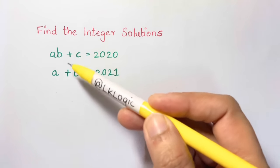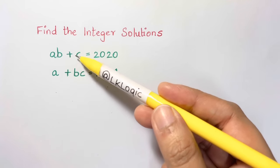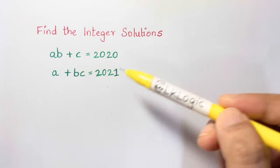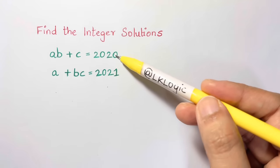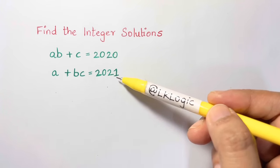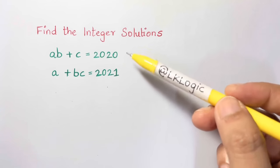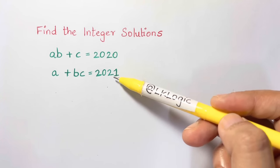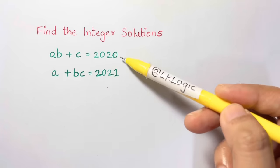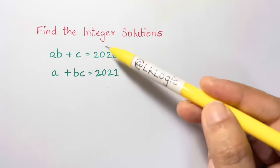So how many solutions are there? We have to find out what is the value for a, what is the value for b, and what is the value for c. What do we see here? The difference between 2020 and 2021 is one. So what can we do? We can subtract — after subtracting we get a difference of one.